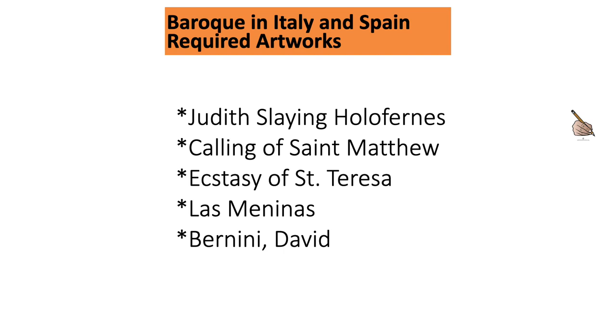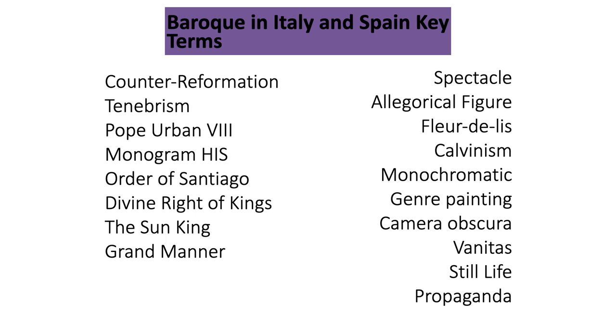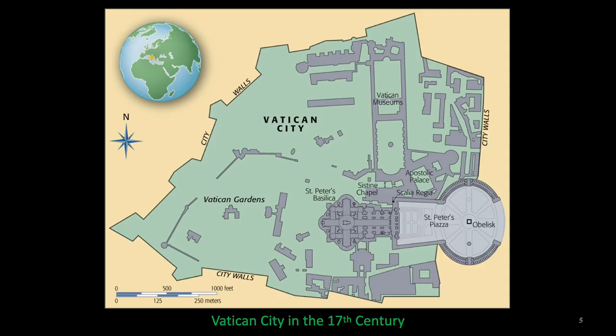Here is a list of the artworks that we will be analyzing, as well as a list of our key terms. With the Catholic Church as the leading art patron in 17th century Italy, the aim and purpose of Italian Baroque art was to restore Roman Catholicism's predominance and centrality.